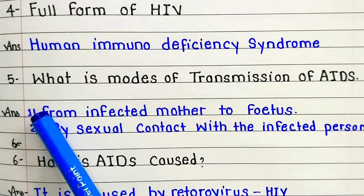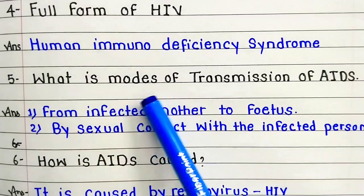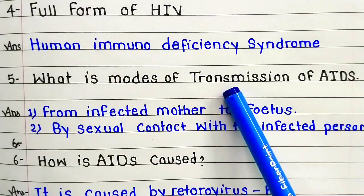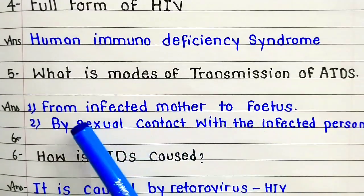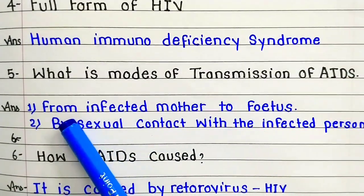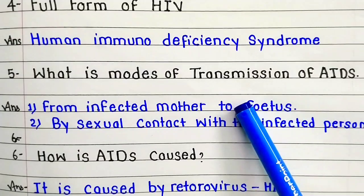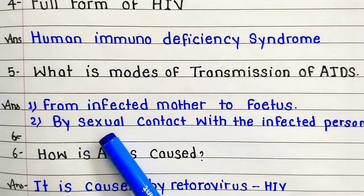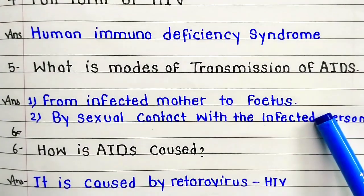Question number five: what are the modes of transmission of AIDS? Answer: from infected mother to foetus, and bisexual contact with the infected person.